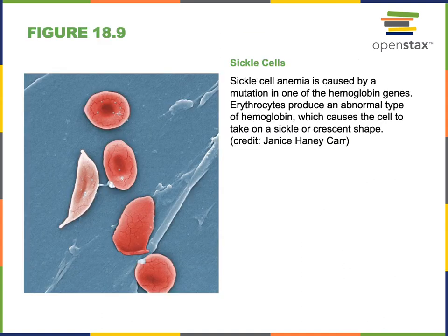Sickle cell anemia is a specific form of anemia resulting from a mutation in the gene for the hemoglobin protein. Anemia is a decreased number of erythrocytes in the blood, leading to a low oxygen-carrying capacity of the blood. There are many different causes of anemia, but sickle cell anemia is a genetic form where a mutation in the hemoglobin gene leads to a change in the structure of hemoglobin, causing it to clump and affect the shape of the erythrocyte.